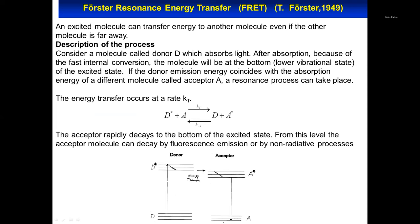The important thing is the delay: the acceptor is not excited at the same time as the donor, but is excited at a later time. That delay causes the phasor to appear outside the universal circle, and this is very important because it is a signature that there is a delay — not only if you have FRET, but also if you have excited-state reactions or other kinds of processes we have studied.